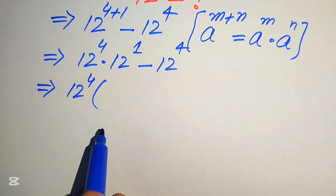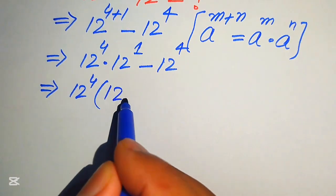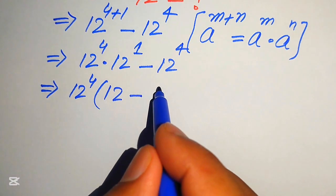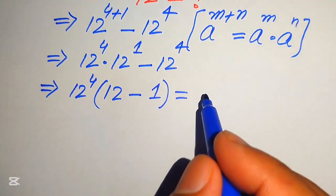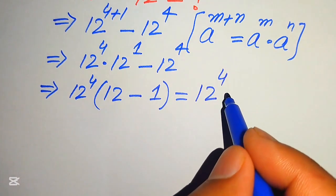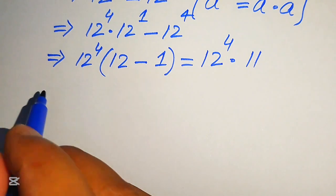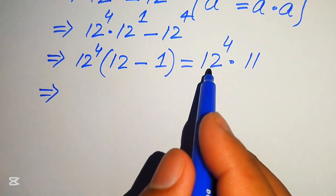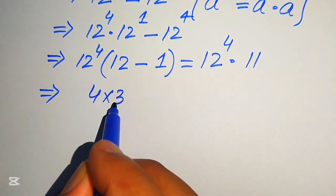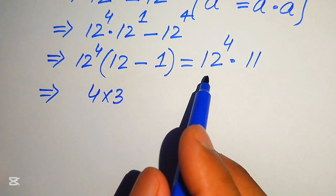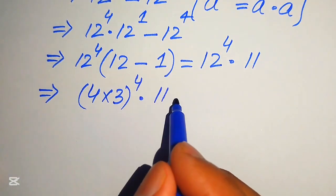We take 12 to the power of 4 as common, and the remaining values are: 12 only, minus — when we take out the common 12 to the power of 4 — we get 1. We subtract these two values and it becomes 12 to the power of 4 multiplied by (12 minus 1), which is 11. In the next step we write 12 as 4 times 3, so we have (4 × 3) to the power of 4 multiplied by 11.